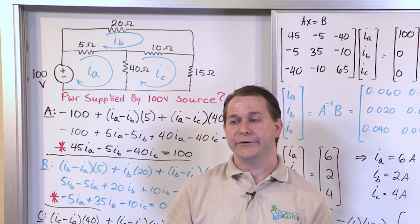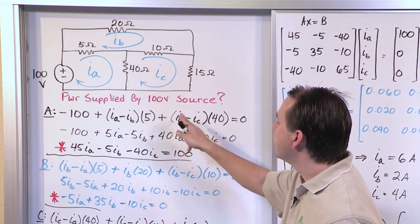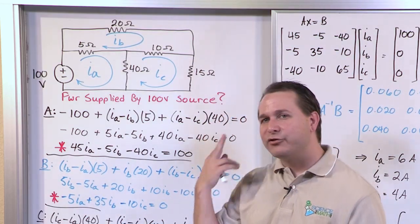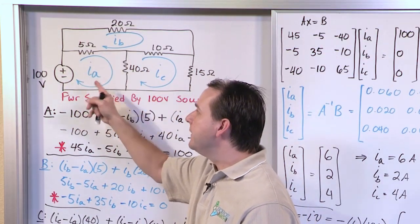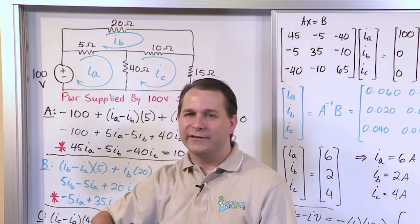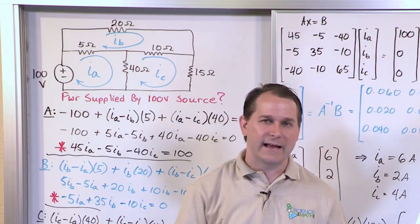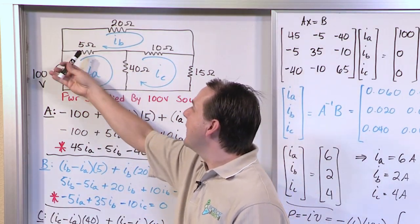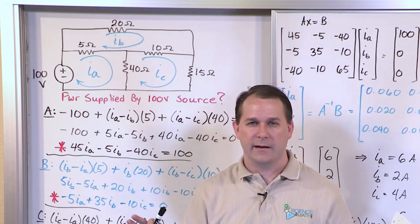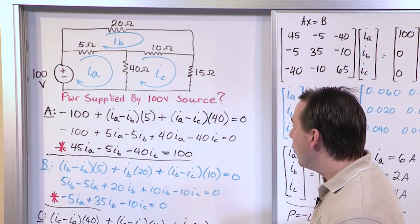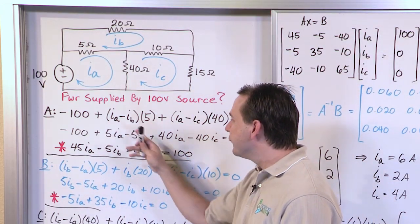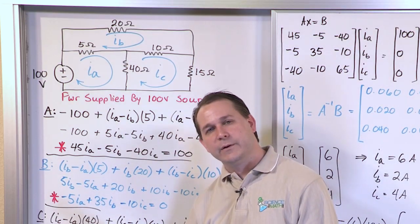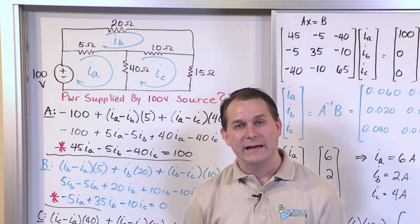That is the second problem in our mesh current series. I highly recommend going back and working this problem again, making sure you're getting the sign conventions correct. You need to develop an internal dialogue as you walk around the circuit: ensure you have a positive voltage drop, which means you have to subtract mesh currents in the right order. Once you write the equations this method is very linear — no division anywhere. Get some practice, then follow along to the next section for more mesh current circuit analysis problems.